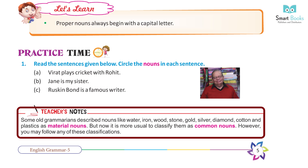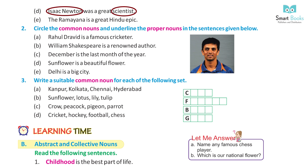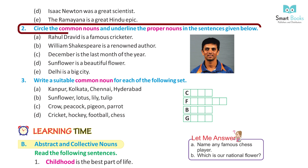Teacher's note: Some old grammarians describe nouns like water, iron, wood, stone, gold, silver, diamond, cotton and plastics as material nouns, but now it is more usual to classify them as common nouns. However, you may follow any of these classifications. D) Isaac Newton was a great scientist. Answer: circle Isaac Newton, scientist. E) The Ramayan is a great Hindu epic. Answer: circle Ramayan.